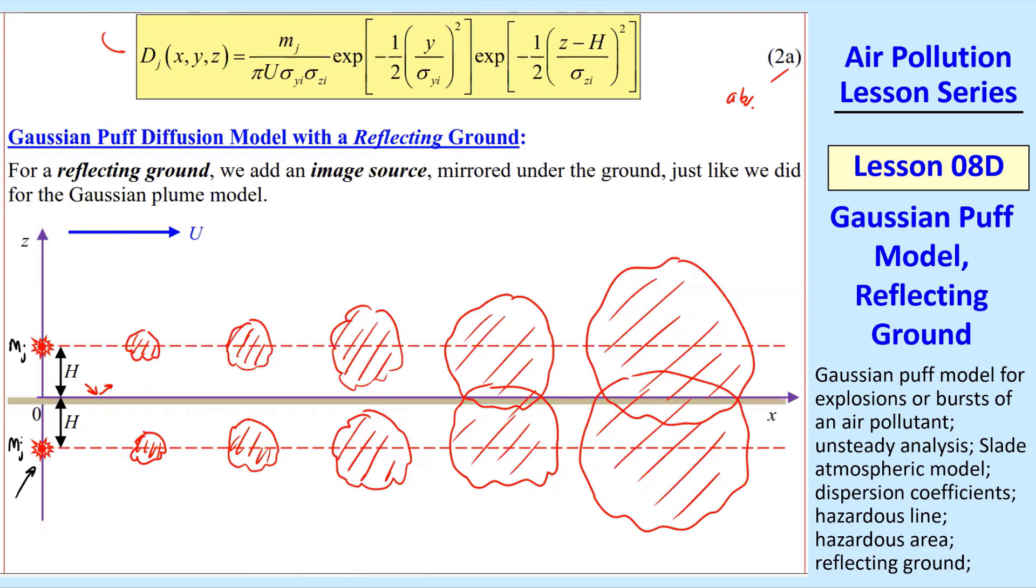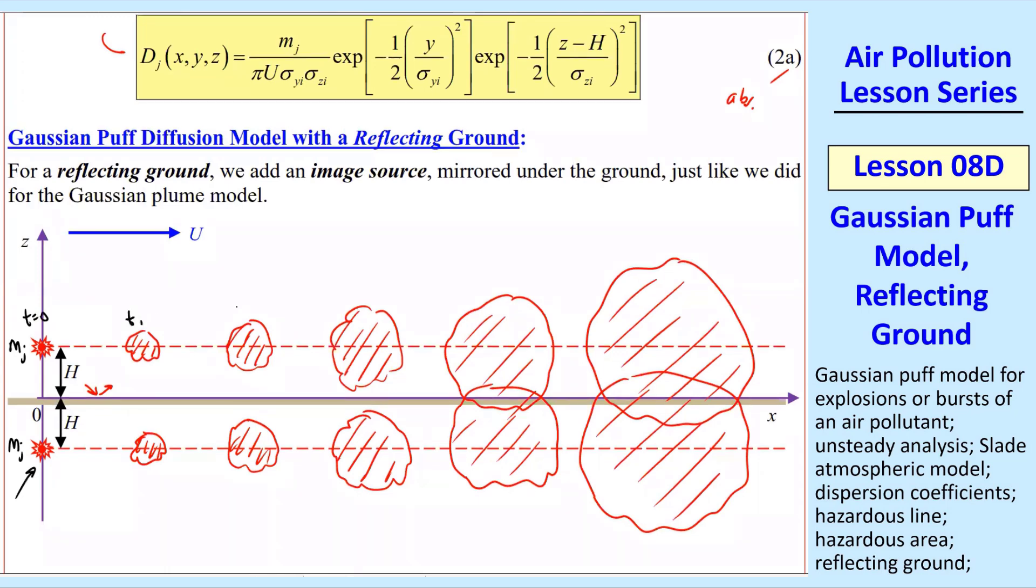Here's our puffs at various times. If this is time t equals 0 where the explosion occurs, this would be t1, t2, etc. We have exactly the same thing, a mirror image under the ground. As they grow, these start to merge together when they both hit the ground. Whatever contaminant hits the ground comes back up as it's diffusing, and we model that by an image.